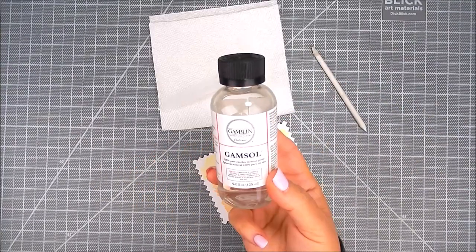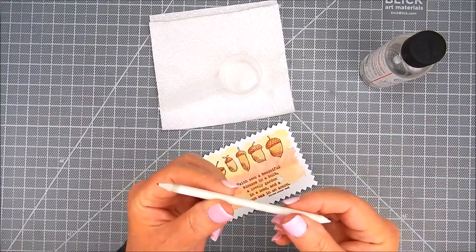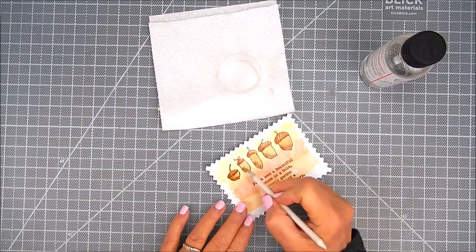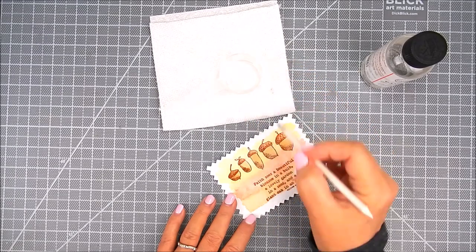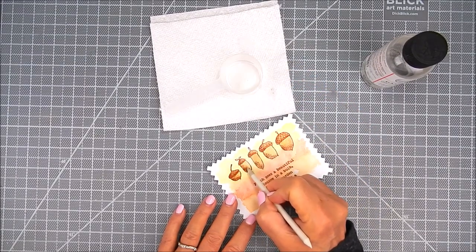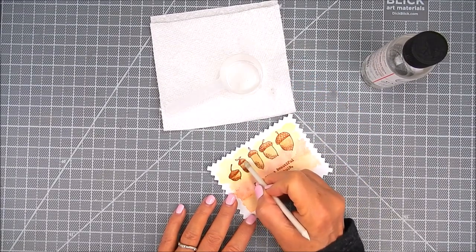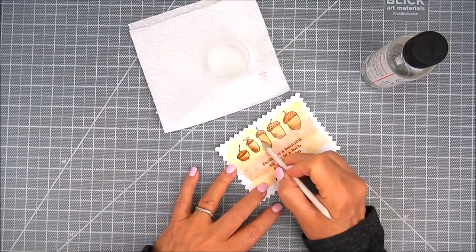Because it's watercolor paper, it has a texture to it and the pencils don't blend as easily. So I'm using Gamsol fluid along with a number two blending stump.